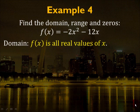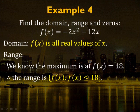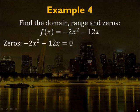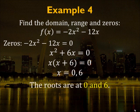The domain is all real values of x. For the range, since a = -2 and the maximum is 18, the graph opens downward so all values of f(x) must be less than or equal to 18 — the range is f(x) ≤ 18. To find the zeros, set f(x) = 0 and divide both sides by -2: x² + 6x = 0. Factoring gives x = 0 or x = -6. The roots are at x = 0 and x = -6, where the parabola intersects the x-axis.